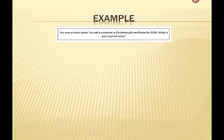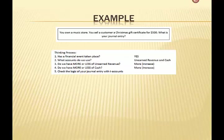Here's our example. We own a music store. We sell a customer a Christmas gift certificate for $500. So what is our journal entry for this? Let's walk through the thinking process. Our financial event has absolutely taken place. What accounts do we use? We will use unearned revenue and cash. Do we have more or less of unearned revenue? We have more. And do we have more or less of cash? We have more.